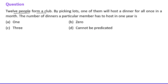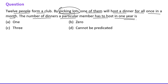The first question says: 12 people from a club, by picking lots, one of them will host a dinner for all once a month. The number of dinners a particular member has to host in one year is? This is totally a lottery-based system, so there is no certain formula. This can't be predicted at all — it may happen that one person hosts zero dinners and another hosts all 12. So this number cannot be predicted.